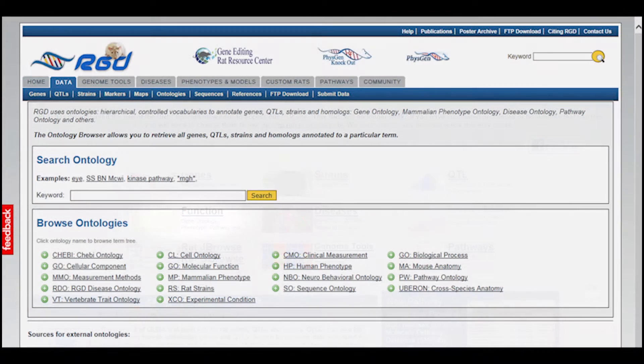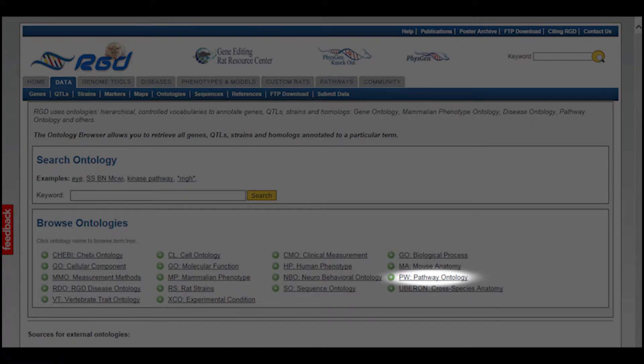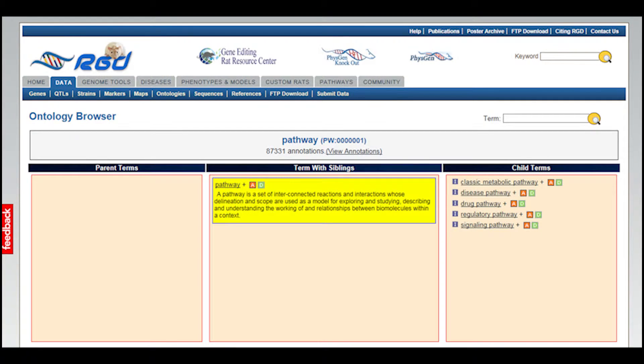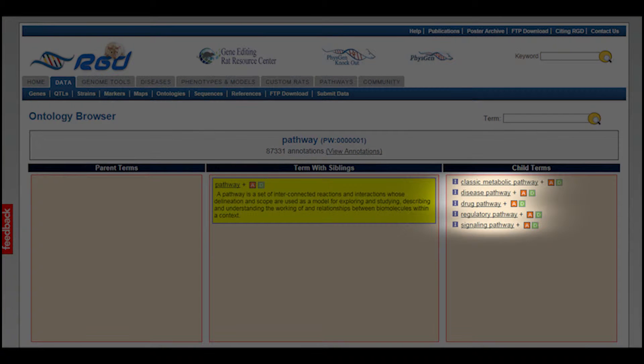On the resulting page, you can search for a term of interest or browse any other vocabularies to find terms. Click on PW pathway ontology to access the RGD ontology browser where you can browse through the ontology. Note that the five categories we mentioned earlier are the five child terms of the top term pathway.